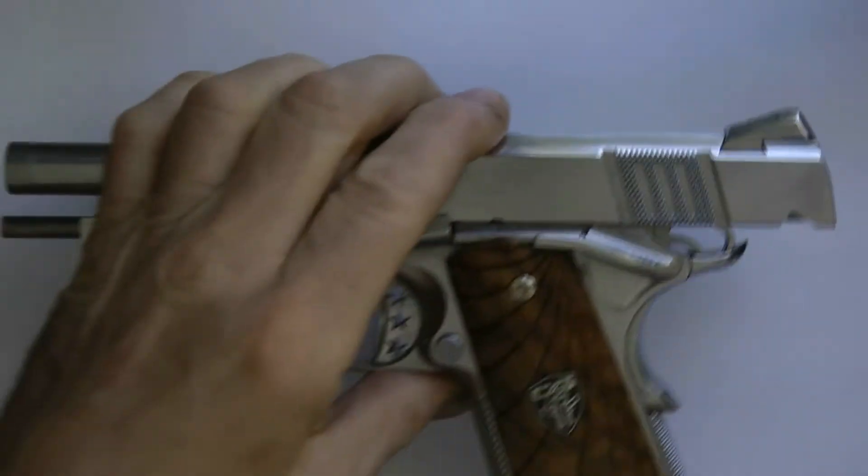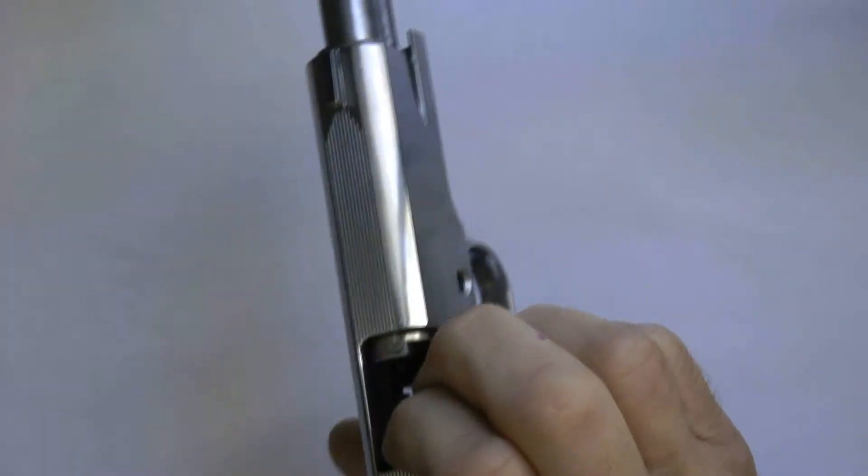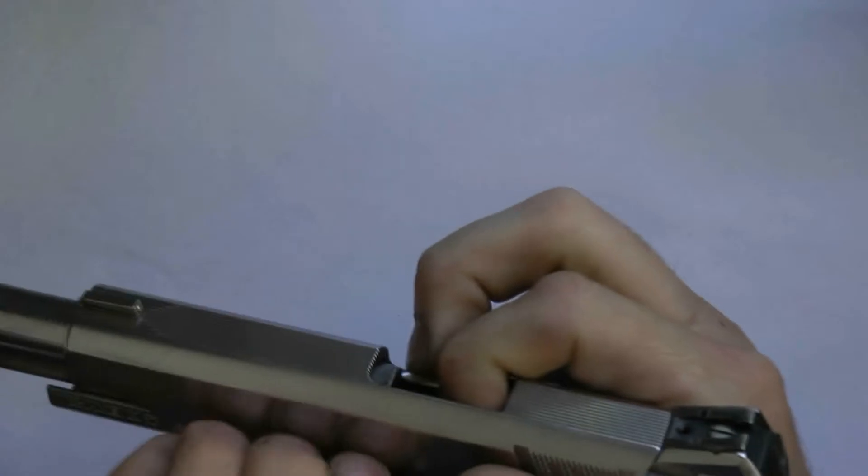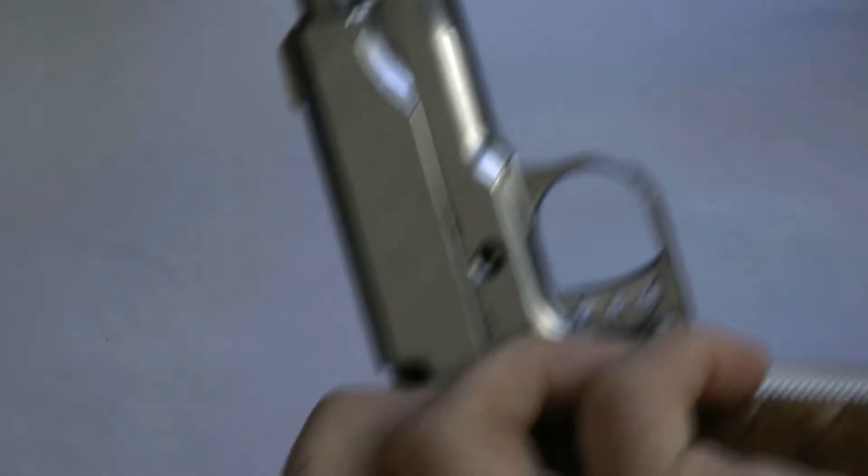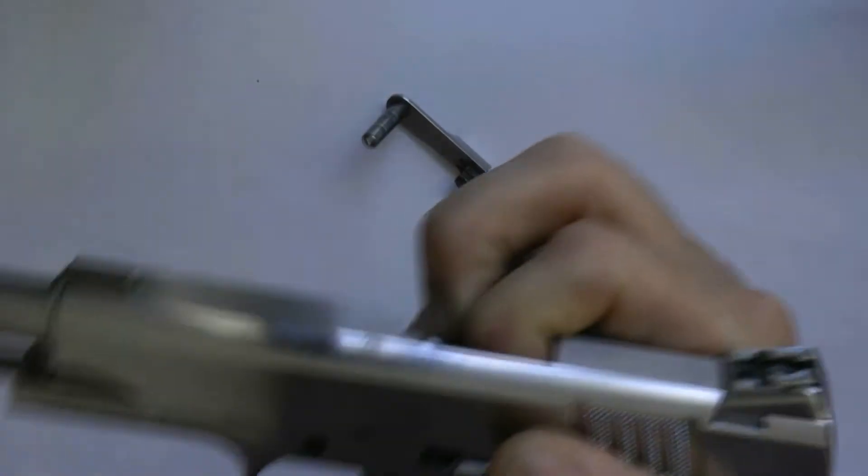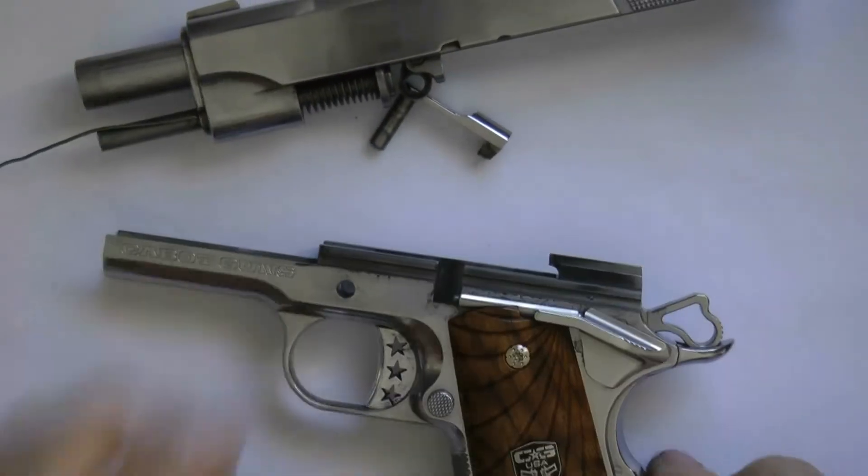Go ahead and take it apart. I've got a one-piece guide rod, so this is the way you kind of have to take it apart. It's not too hard. Push this out like this, line it up, push the slide release out. Put that in there like that, let go of it. And there we go, we're apart.